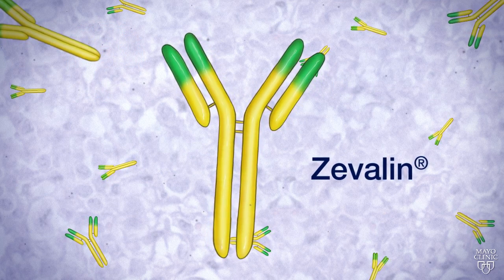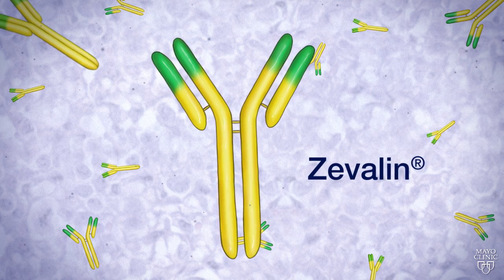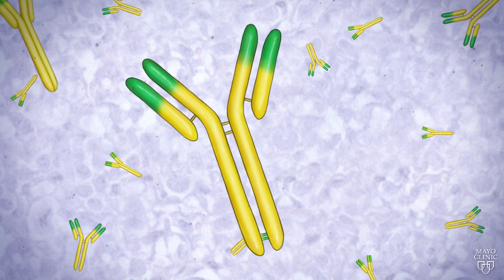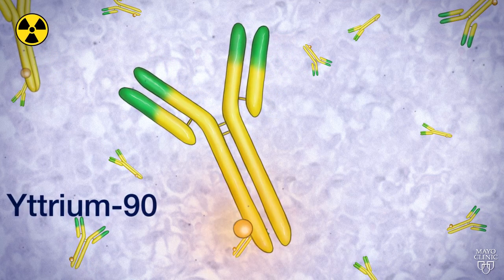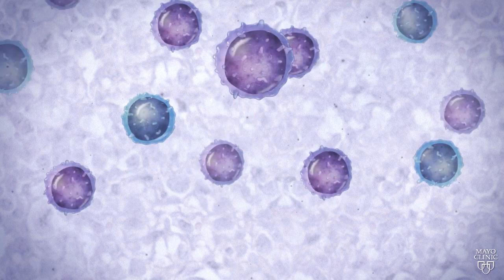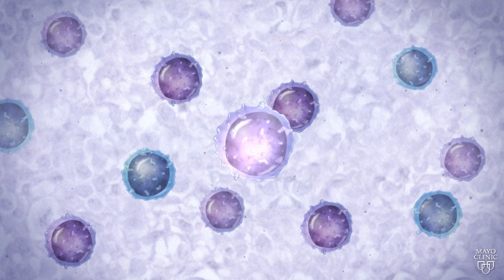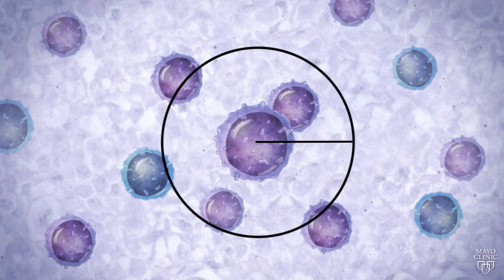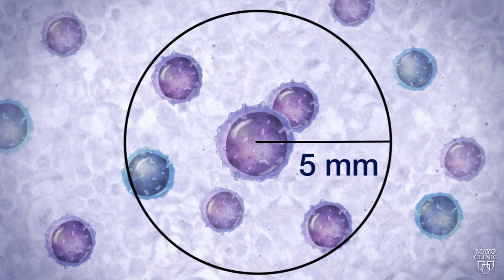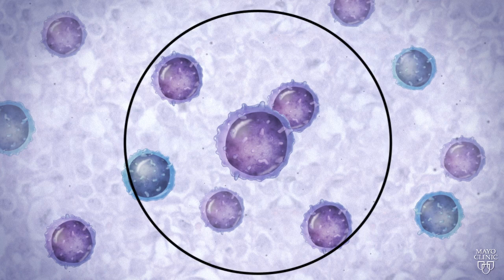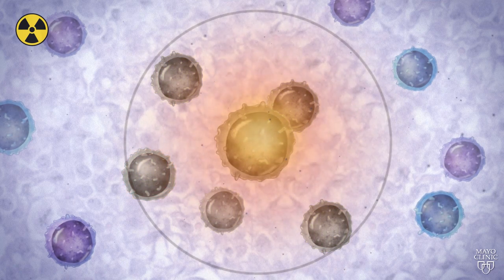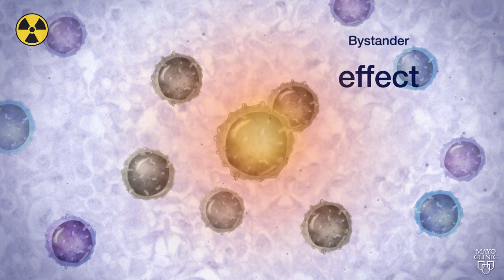Zevalin is the same monoclonal antibody as Rituxan, which recognizes and binds to the CD20 receptor. By radiolabeling this antibody, Zevalin with the beta-emitter yttrium-90, it binds to the CD20 receptor, targeting both the bound lymphoma cell and adjacent cells. The path length for the beta-emitter yttrium-90 is 5 millimeters, so all cells within this range are also targeted. Not only does the radiation destroy the B-cell to which the antibody is bound, but it also damages the surrounding cells in what is called the crossfire or bystander effect.